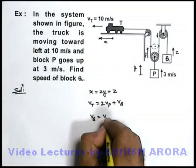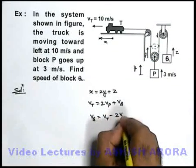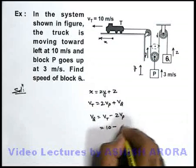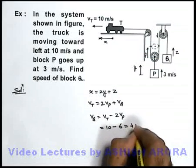Here vQ can be written as vT minus 2vP. This can be written as 10 minus 2 into 3, that is 6. This will be 4 meters per second.